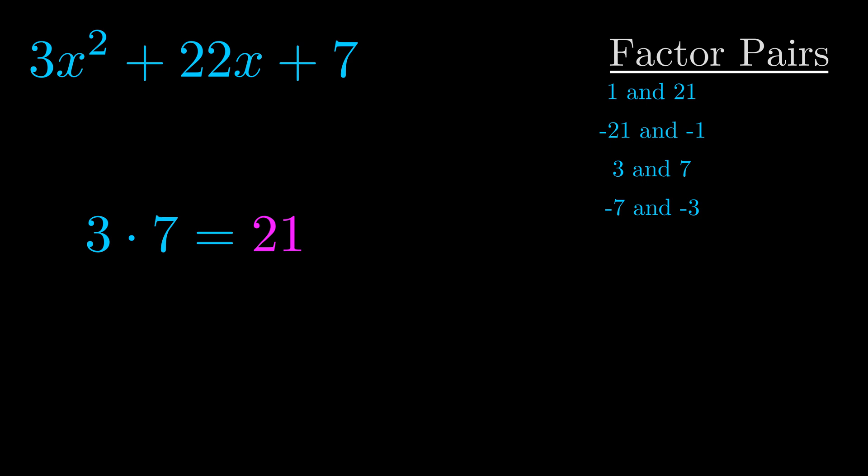The b value is the coefficient on the x term. That's the middle term, the one that we haven't done anything with yet. And really this is the only factor pair that we need.